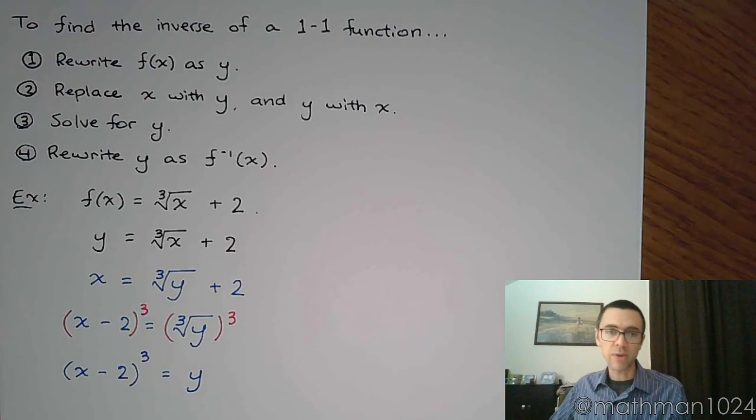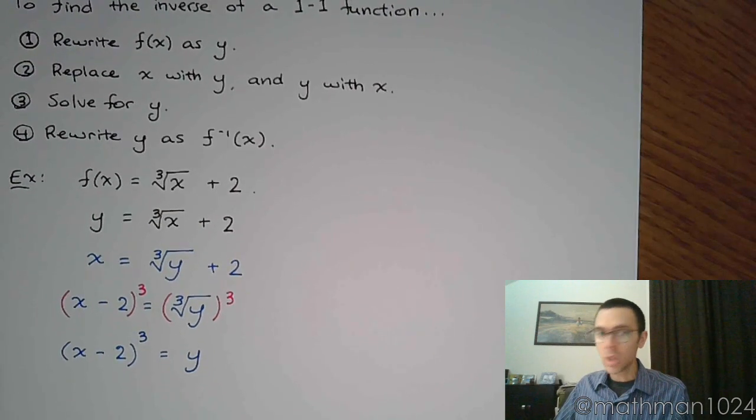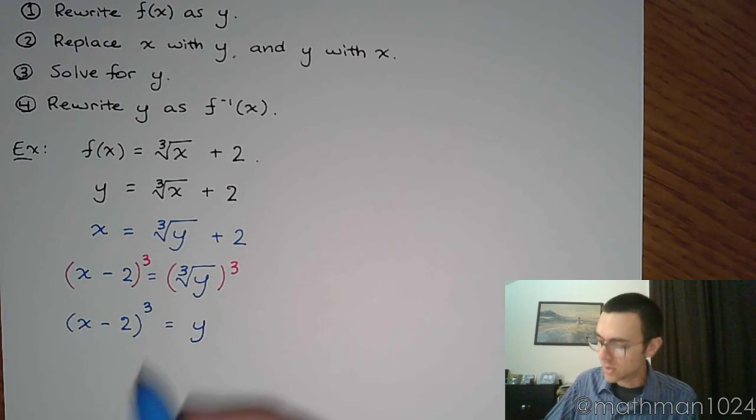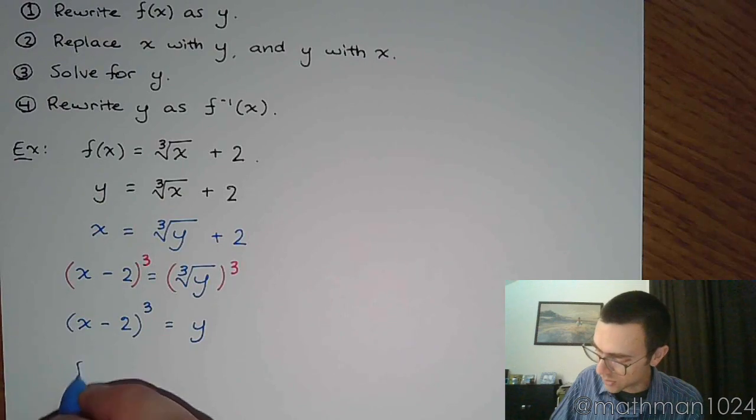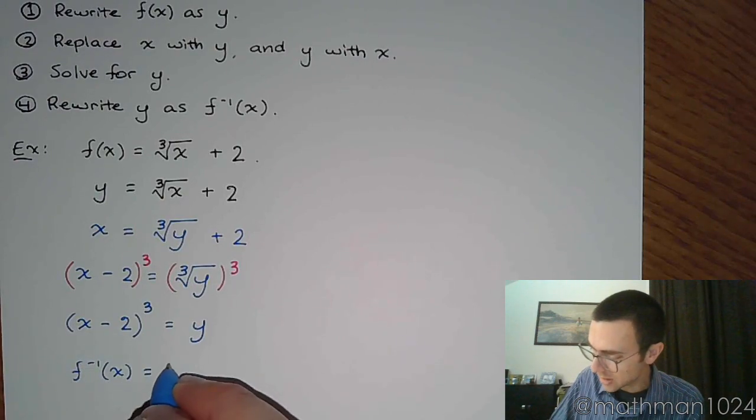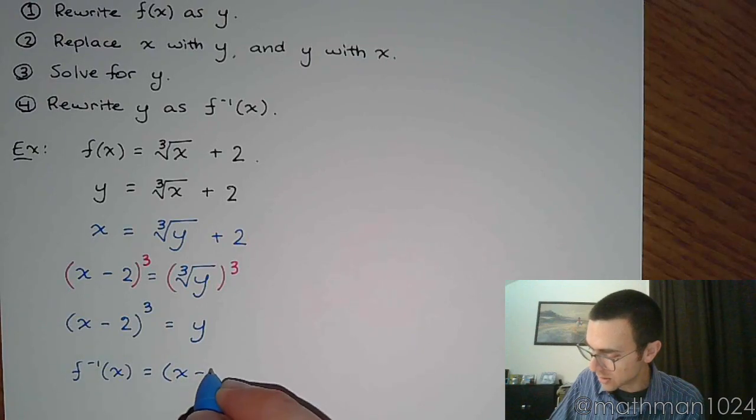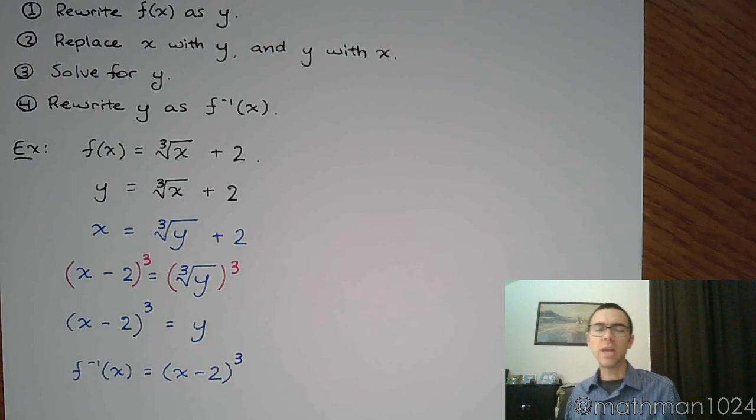And then the final step that we have is to rewrite this. So instead of saying y, we are just going to say f inverse. So I'm just going to put it over here on the left side as well. So f inverse of x is equal to x minus 2 to the third. And if you look at what we just had on the graphs, that's what we came up with for our inverse, just by looking at the graphs.